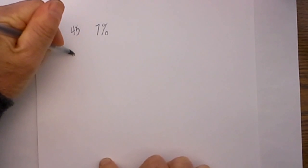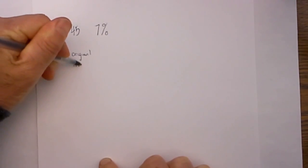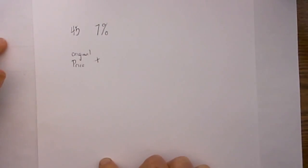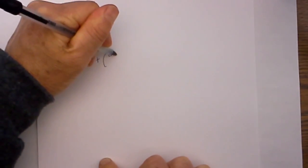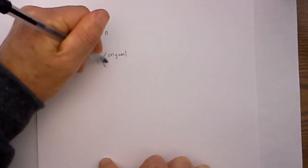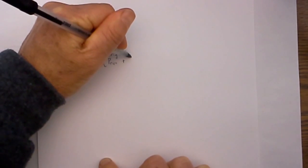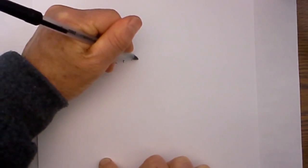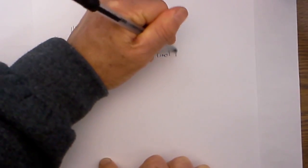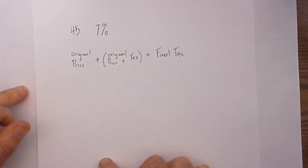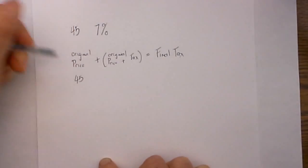I will use the formula to take the original price plus the tax equals the final price. That is the formula we can use to solve that. Let's plug in what we know. We know the original price is $45.